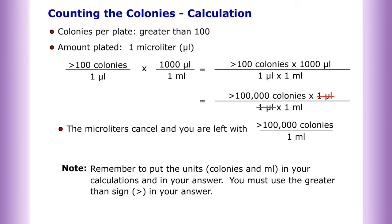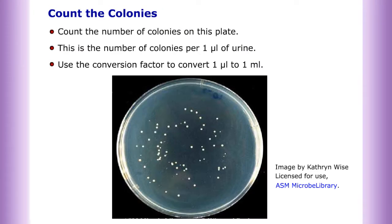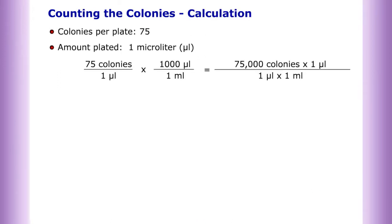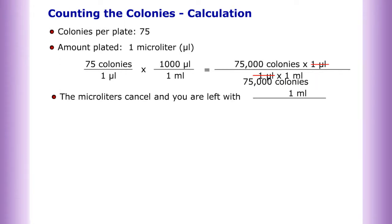Remember to put the units of colonies and milliliters in your calculations and in your answer — you must use the greater than sign in your answer. Next example: count the number of colonies on the plate. This is the number of colonies per one microliter of urine. Use the conversion factor to convert one microliter to one milliliter. Calculation: 75 colonies per plate, amount plated one microliter — the microliters cancel and you are left with 75,000 colonies per one milliliter.